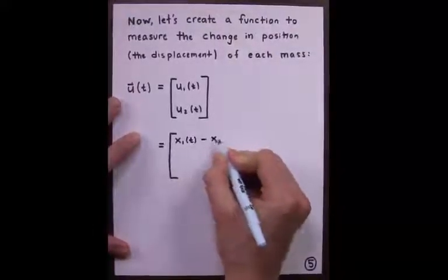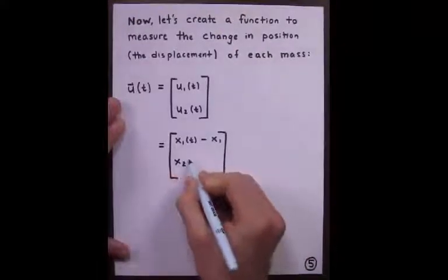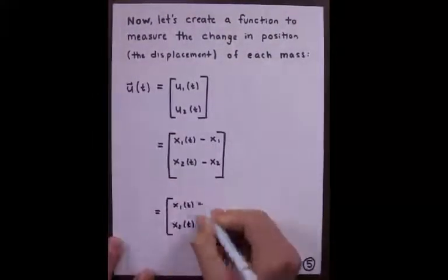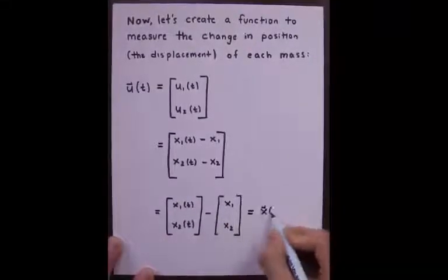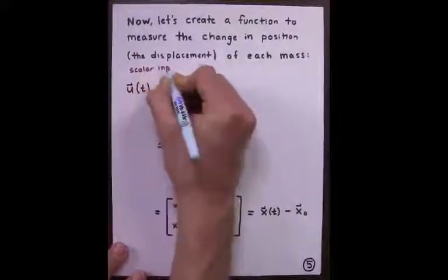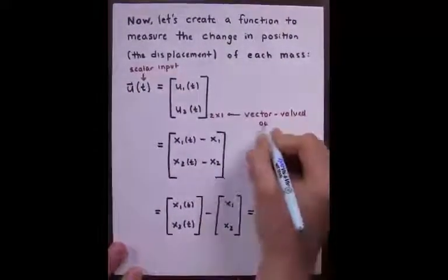With a little mathematical analysis, we see that this is the function x of t minus x naught. Notice that we have a scalar input t and vector-valued output u of t.